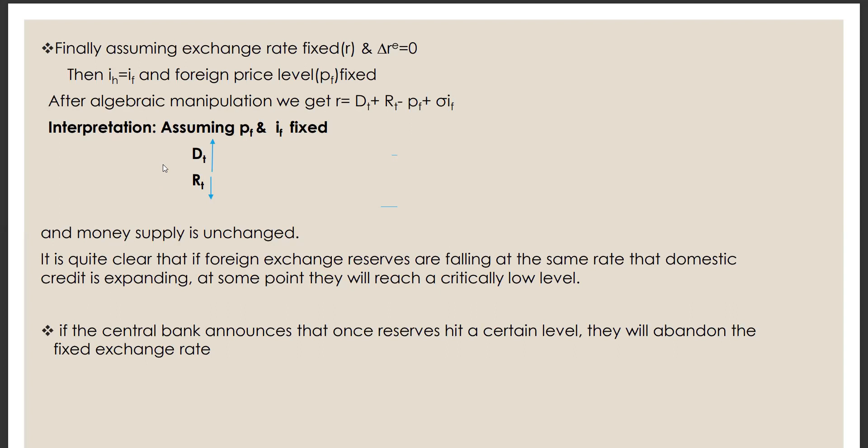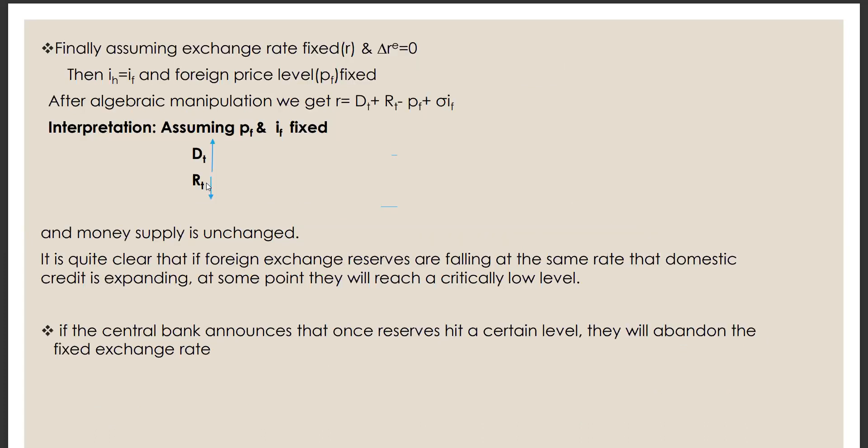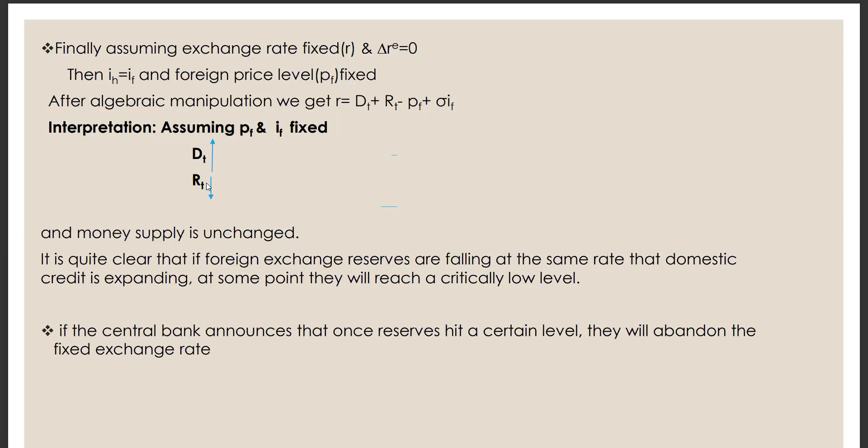Finally, we assume that exchange rate R is fixed and DLRE is equal to zero. Then we can say that IH is equal to IF and foreign price level PF is equal. PF is also fixed. So after algebraic manipulation, we get R is equal to DT plus RT minus PF plus sigma IF.